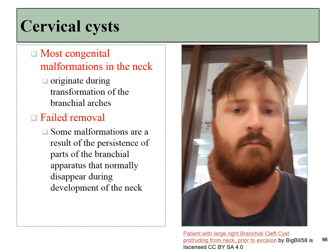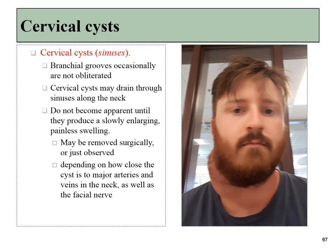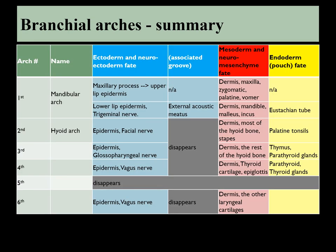A cervical cyst can occur when the pharyngeal clefts fail to fuse and disappear, so a remnant of that cleft persists somewhere in the neck. This can lead to fluids draining from the head down into this space, which may cause swelling. The swelling may or may not cause complications — if it's not too bad, they may just be observed, but they can be removed surgically. Some of the complications of these surgeries include the proximity of the swelling to very important structures such as the carotid arteries, jugular veins, or the facial nerve. But that wraps up the development of the branchial arches.